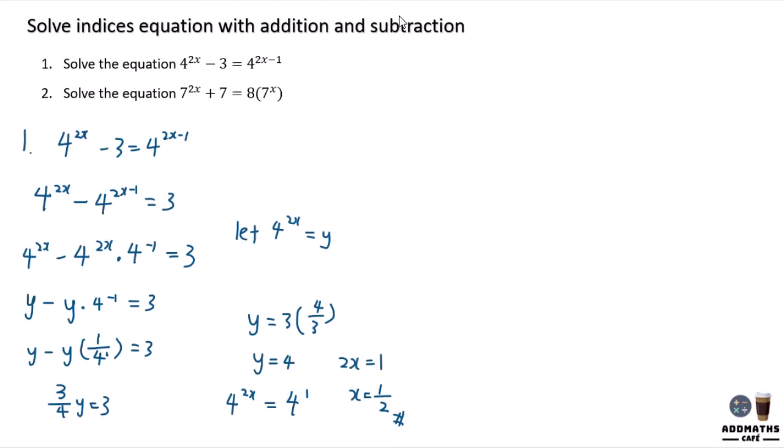For question 2, bring all the x terms to one side. 7^(2x) - 8 × 7^x = -7.